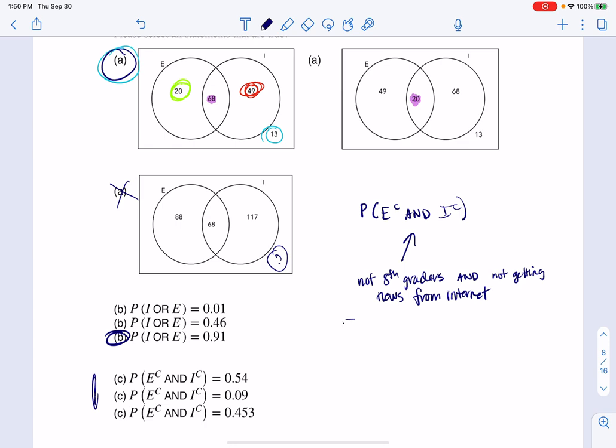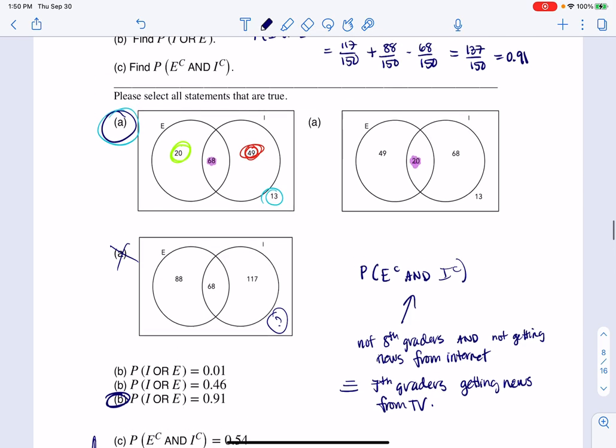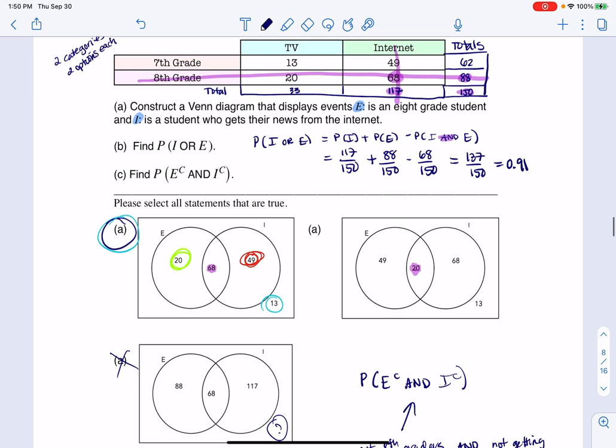And so if I think about seventh graders that are getting their news from TV, let me scroll back up. If I want to think about that from the table perspective, I can see it's these 13 folks.